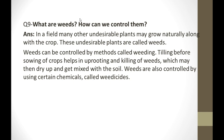What are weeds and how can we control them? Many other undesirable plants may grow in a field. Weeds can be controlled by tilling — uprooting their roots so they dry up and get mixed with the soil, providing nutrients without regrowing. Weeds are also controlled by using certain chemicals called weedicides, such as 2,4-D.